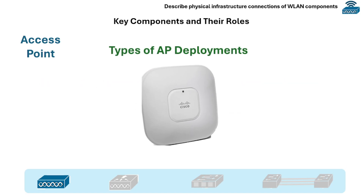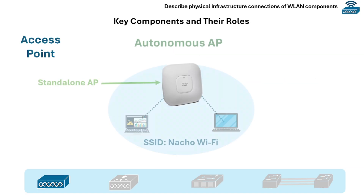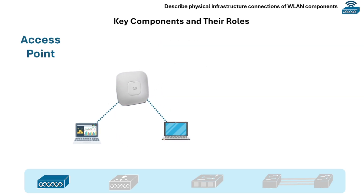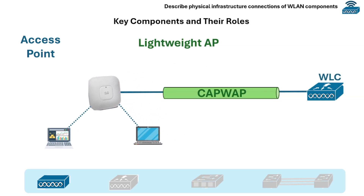Here are the types of AP deployments. First is autonomous AP, which operates independently with no wireless LAN controller. And the lightweight AP is managed by the WLC and sends traffic via CAPWAP tunnels.